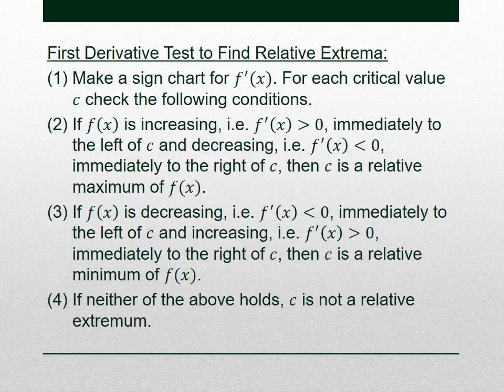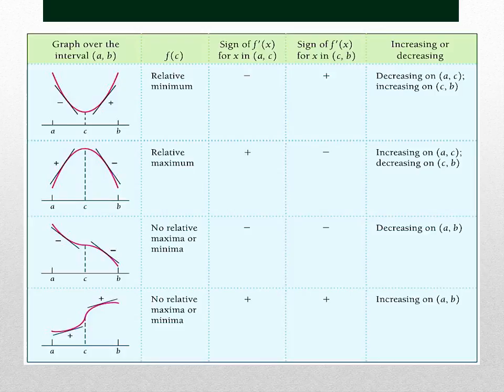To find relative extrema, we use the first derivative test. We'll make a sign chart and check the first derivative on the left and right sides of all critical values. If decreasing to the left and increasing to the right, it's a minimum. If increasing to the left and decreasing to the right, it's a maximum. If the same on both sides, it's neither. Let's learn this by example.